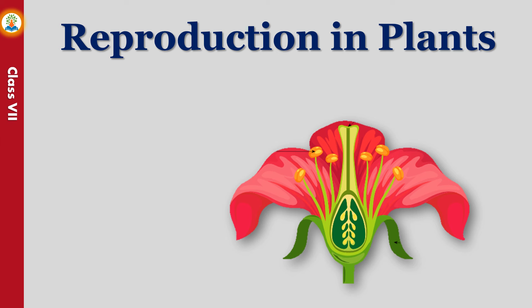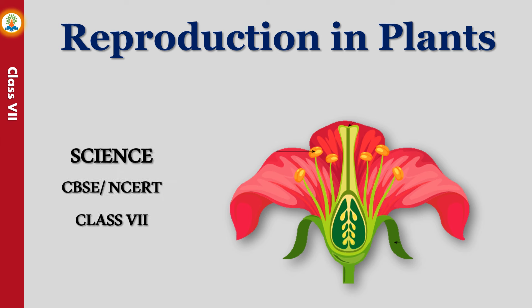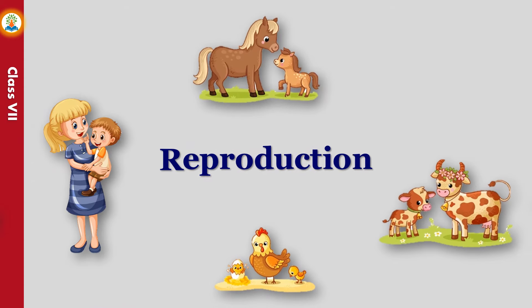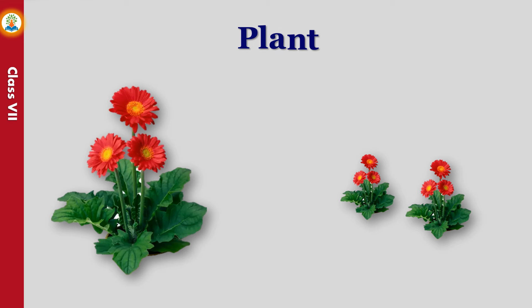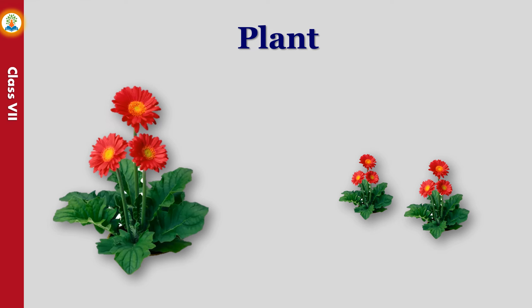Hello friends, in this video we will learn about reproduction in plants. The process by which an individual produces young ones of its own kind is known as reproduction. It leads to an increase in number of individuals of a species and maintains the continuity of life. A plant also reproduces more plants of its own kind.